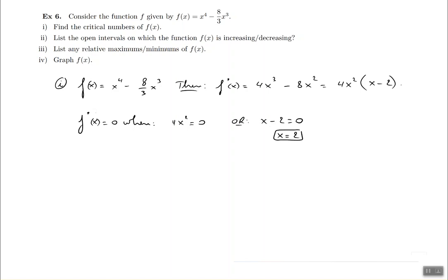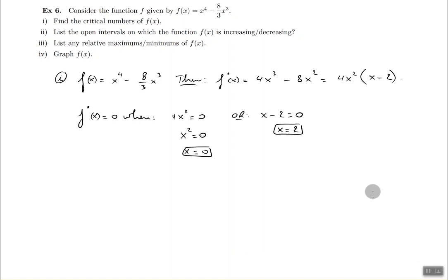Now for 4x squared to be 0, the 4 is really not going to matter because if you divide both sides by 4, you end up with x squared equal to 0, and it's perfectly legit. At this point, for x squared to be equal to 0, all you need really is x to be 0 because x to the power of 2 when x is 0 will be 0 squared and that will result in a 0 at the end. So those are the critical values.